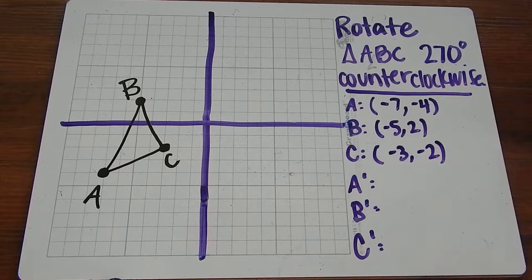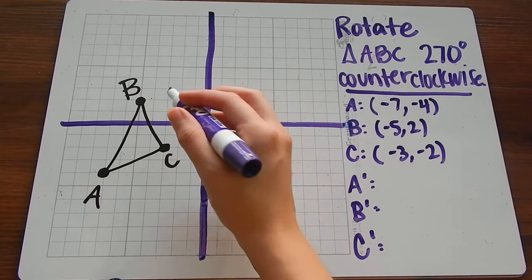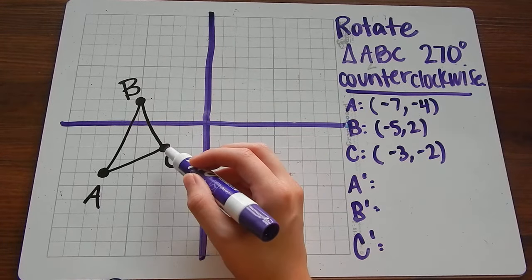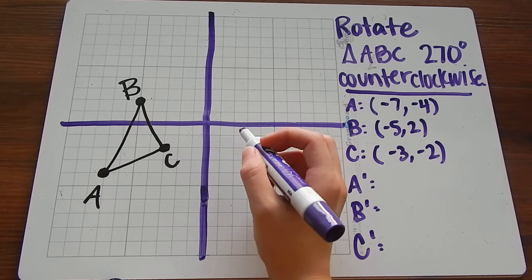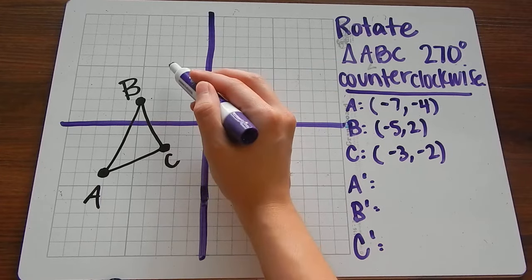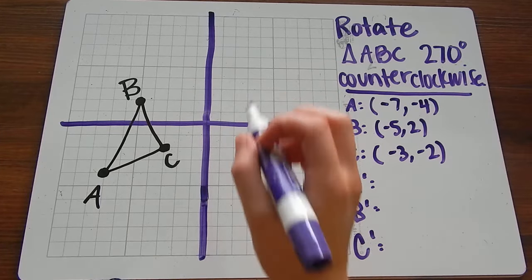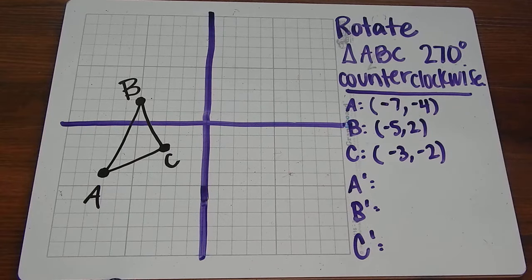When we rotate counterclockwise 270 degrees, we need to move three quadrants. Three because 270 divided by 90 is 3. So each quadrant is 90 degrees. So each point needs to be three quadrants away, counterclockwise, from where it was. So A and C are going to end up here. B is going to end up somewhere here. Make sure you're checking for that as you write your new points and plot them.